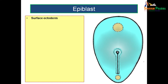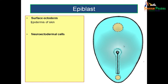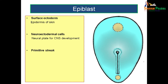The epiblast, when viewed from above after removing the amniotic membrane, differentiates into a layer known as surface ectoderm, from which you have the formation of epidermis of skin. Towards the midline, the same epiblast gets modified as neuroectodermal cells. Neuroectodermal cells give rise to the neural plate, which is responsible for central nervous system development.